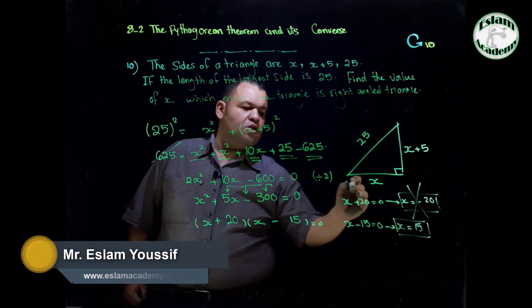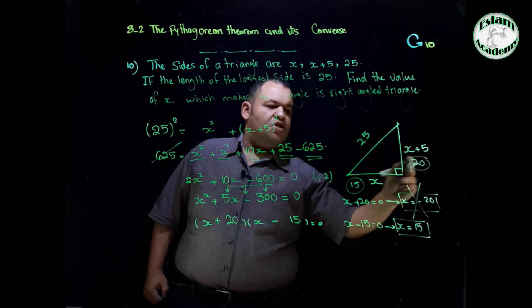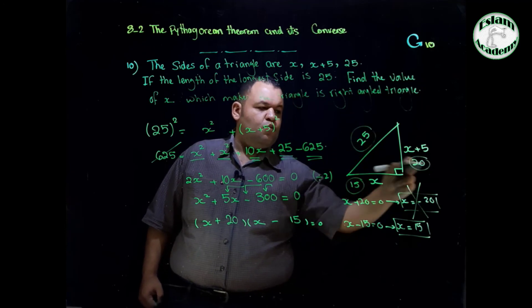Then we can check by substitution. We have 15, 15 plus 5 equals 20. So the three sides that we have are 25, 20, and 15.